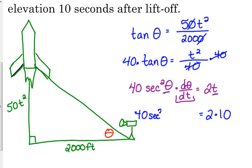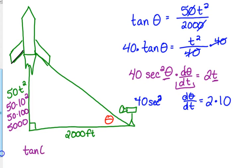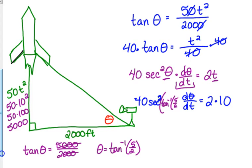Now we don't have theta, but we can find it at that instance. 10 seconds after liftoff means how high are we in the air? 50 times 10² is 50 times 100, so that is 5,000. So theta at this instance: tangent of theta equals 5,000 over 2,000. Knock off all those zeros. Theta equals the inverse tangent of 5 over 2. I'm going to write that in my problem right there. I'm not going to round it off yet.